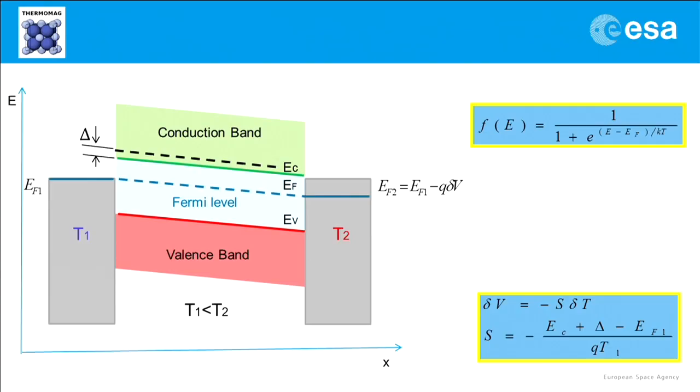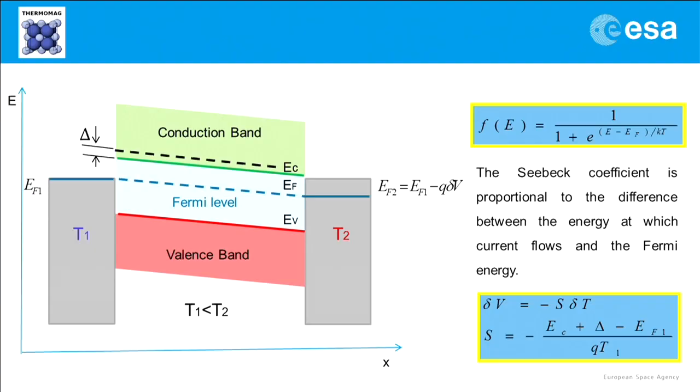If we make the probability of conduction band being occupied by the electrons from contact 1 and contact 2 equal, and put equality between two Fermi functions and replace EF2 by EF1 minus the Q delta V, we get some value which shows the proportion between temperature difference and voltage difference. This value is the Seebeck coefficient. So Seebeck coefficient is proportional to the difference between the energy at which electron current flows and the Fermi level.